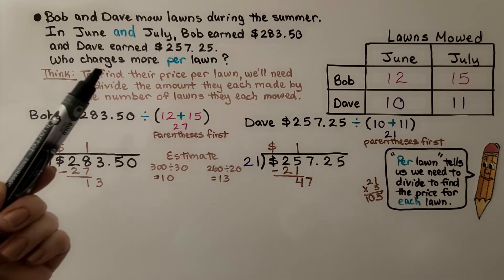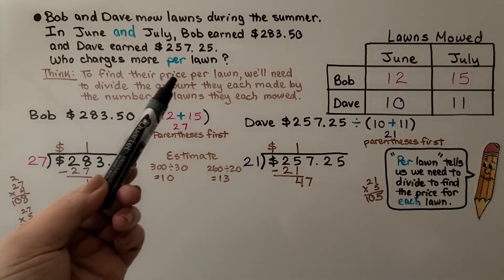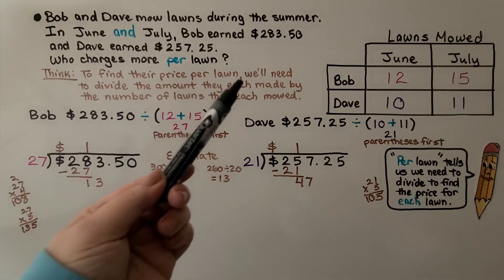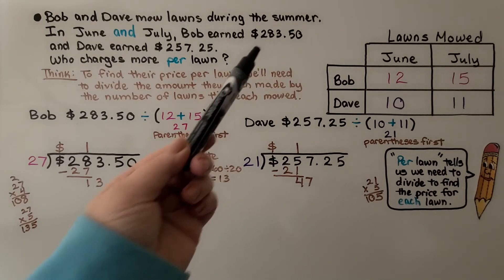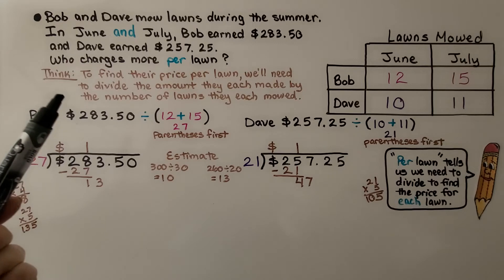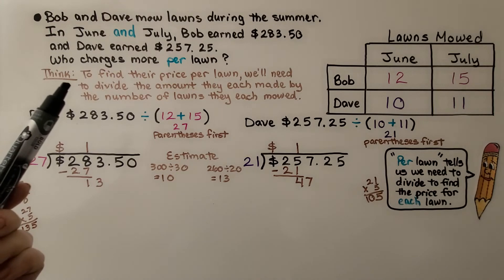So you might look at this and think, well, Bob earned more. He probably charges more, right? But to find their price per lawn, we need to divide the amount they each made by the number of lawns they each mowed.